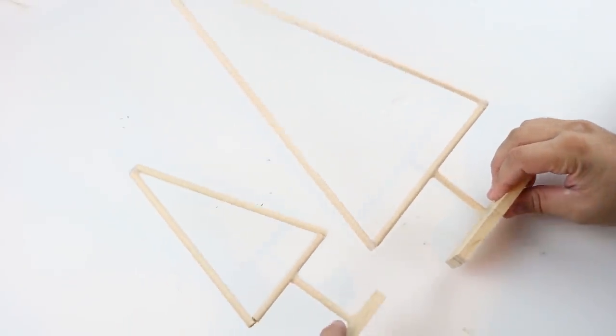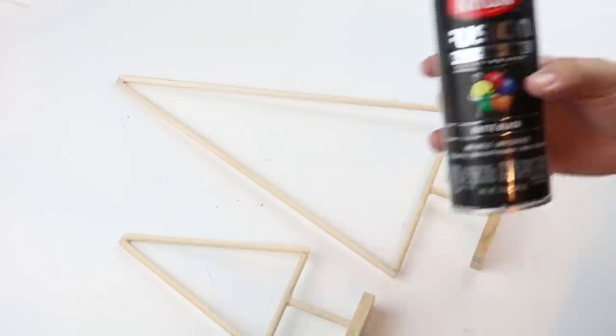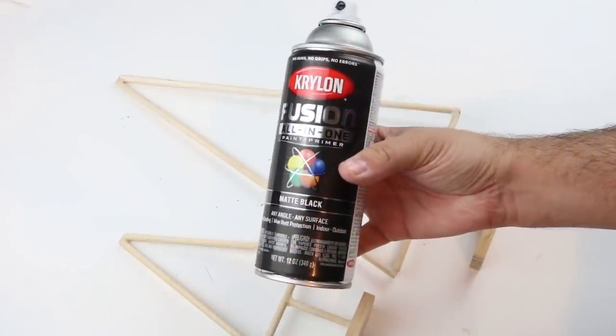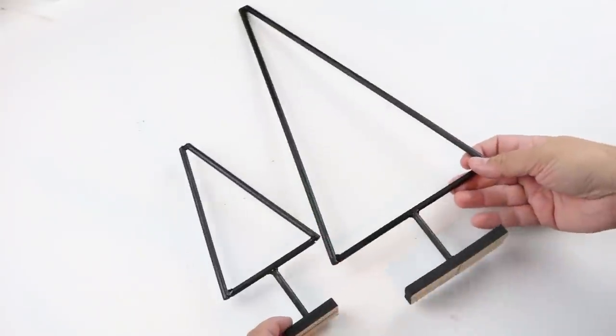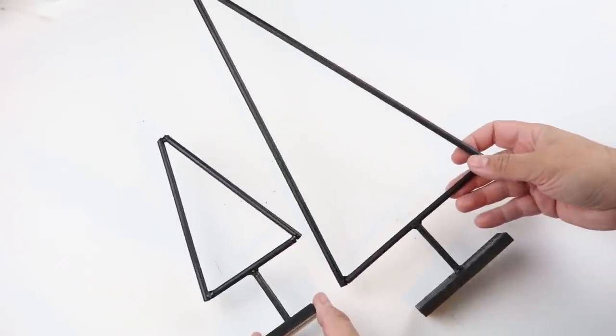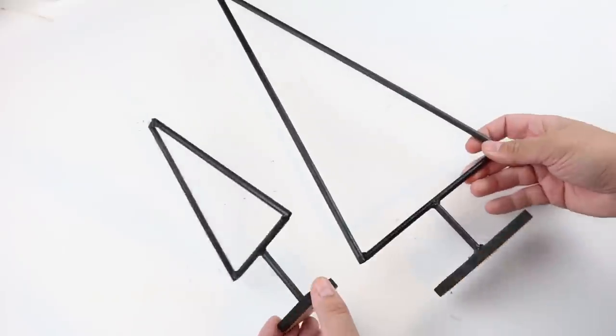Once we have all those pieces glued together, the last part is to add some paint. I'm using this matte black from Krylon and giving it a couple coats. Perfect way to finish this up, a very sleek and modern look to these Christmas trees.